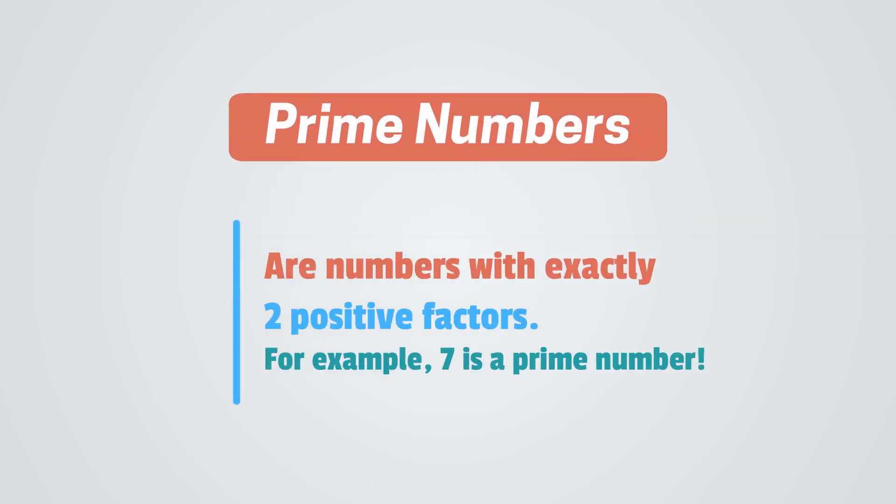Prime numbers are numbers with exactly two positive factors. For example, 7 is a prime number because the only factors of 7 are 7 and 1.